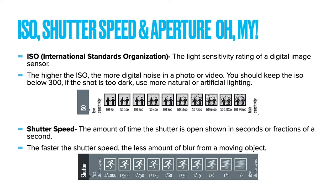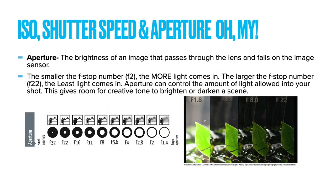ISO stands for International Standards Organization — this is the light sensitivity rating of a digital image sensor. The higher the ISO, the more digital noise in a photo or video. You should keep the ISO below 300; if the shot is too dark, use more natural or artificial lighting. Shutter speed is the amount of time the shutter is open, shown in seconds or fractions of a second — the faster the shutter speed, the less blur from a moving object. Aperture is the brightness of the image that passes through the lens and falls on the image sensor. The smaller the f-stop number, the more light comes in; the larger the f-stop number, the less light comes in. Aperture can control the amount of light allowed into your shot, giving room for creative tone to brighten or darken a scene.